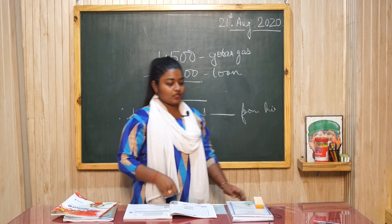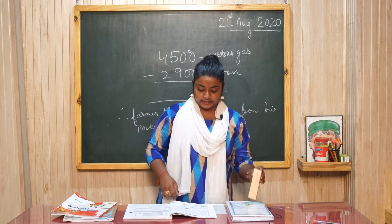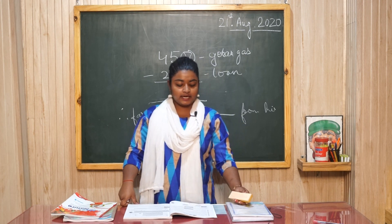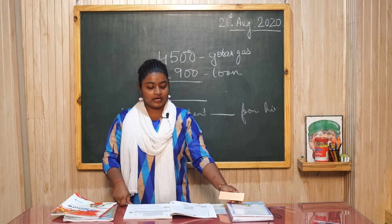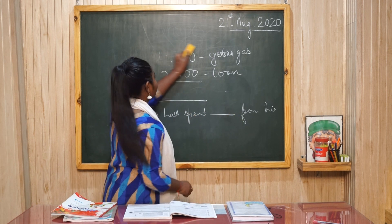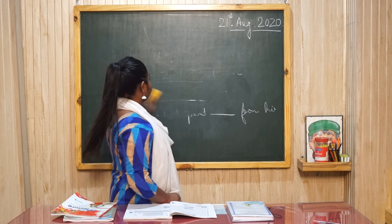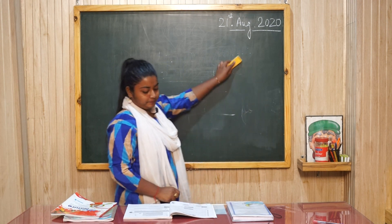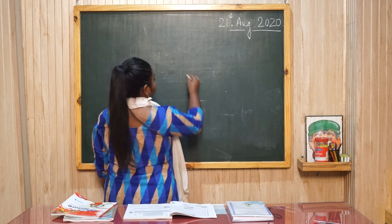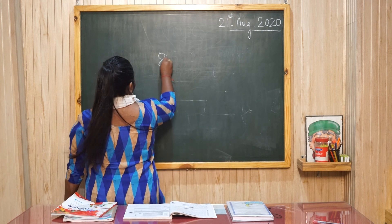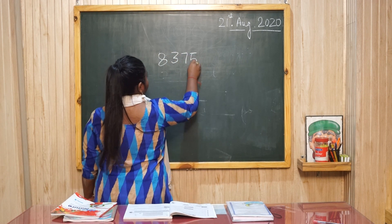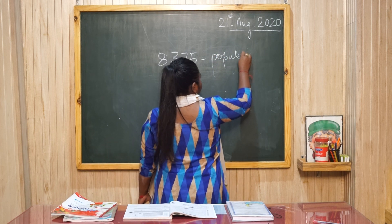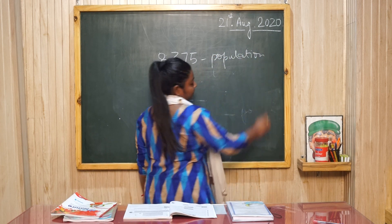A statement आपको जरूर लिखने होती हैं जो वो बता रहे हैं. Next is: the population of a village is 8,375. Population of village कितनी हैं? 8,375. Population है of village की.